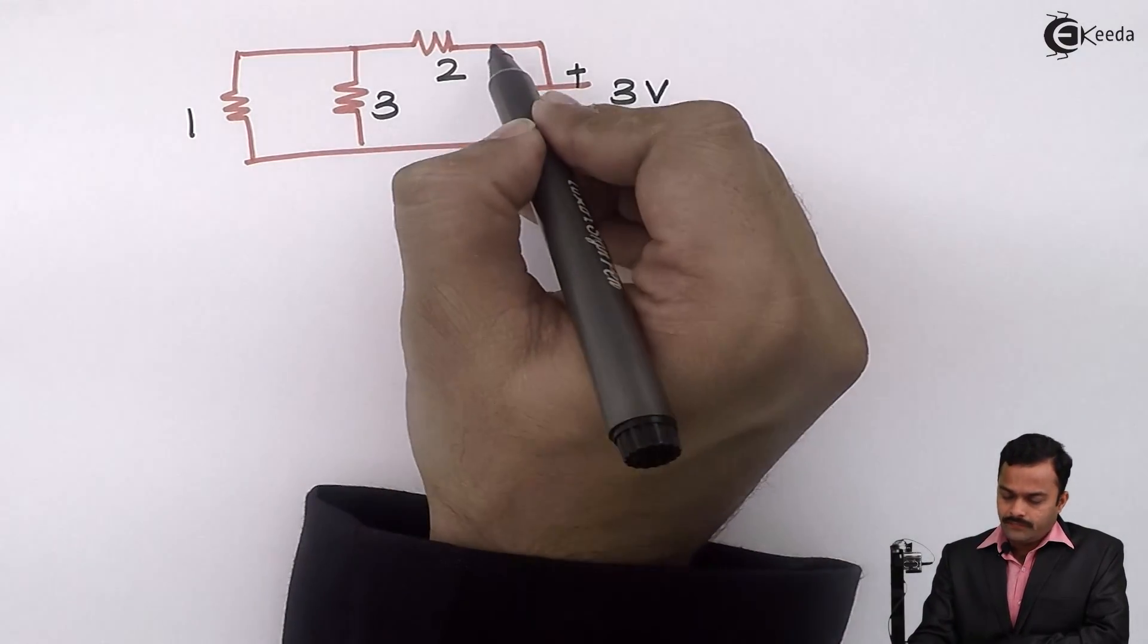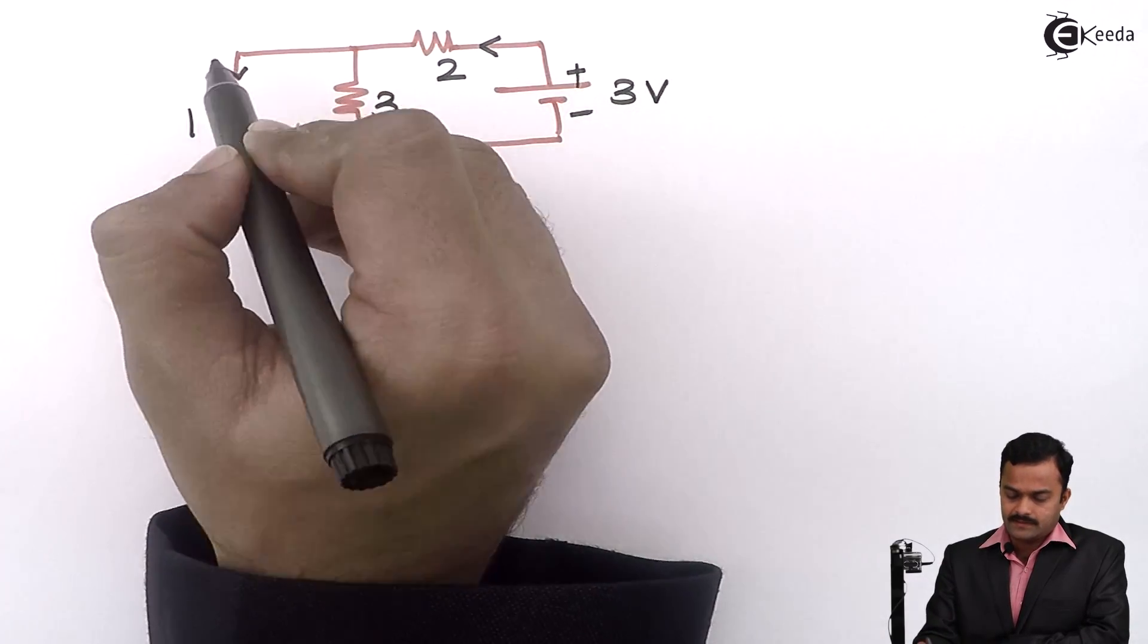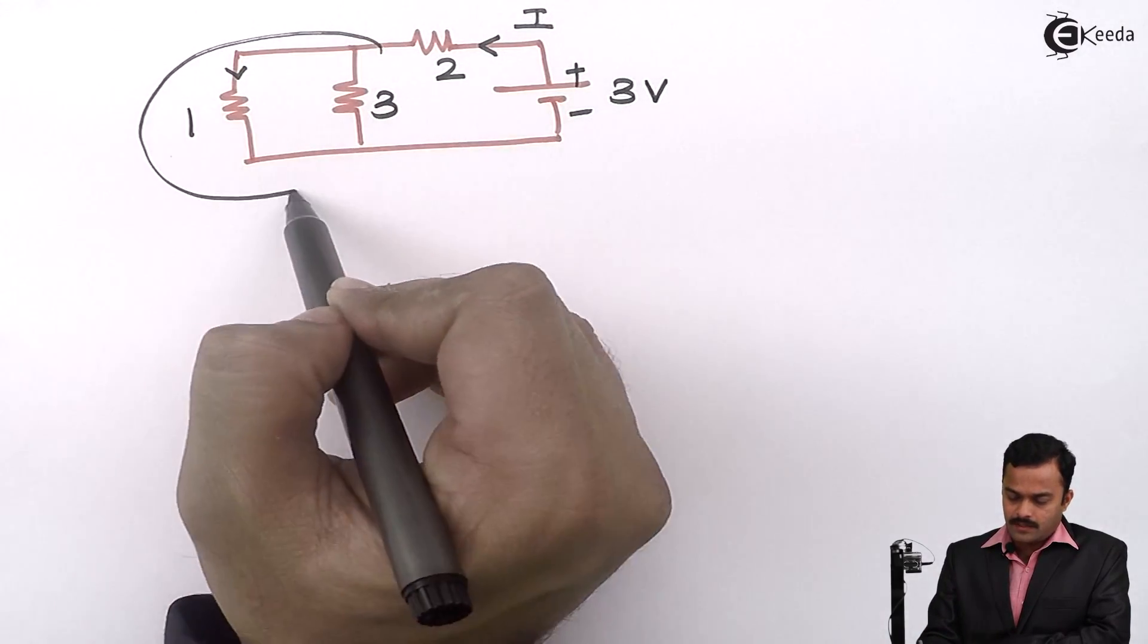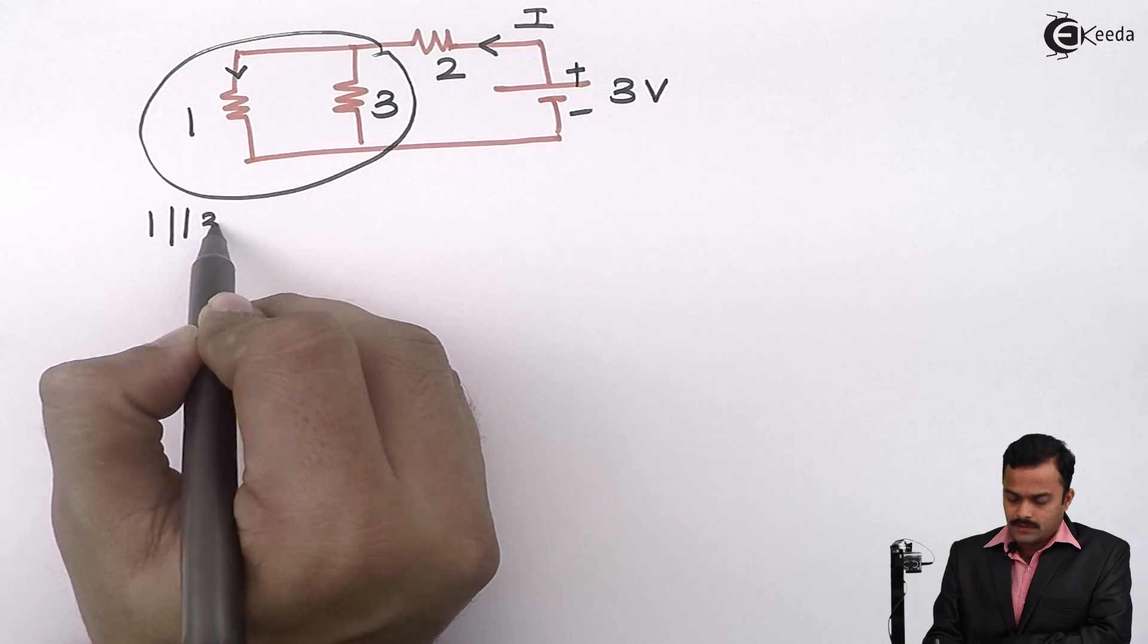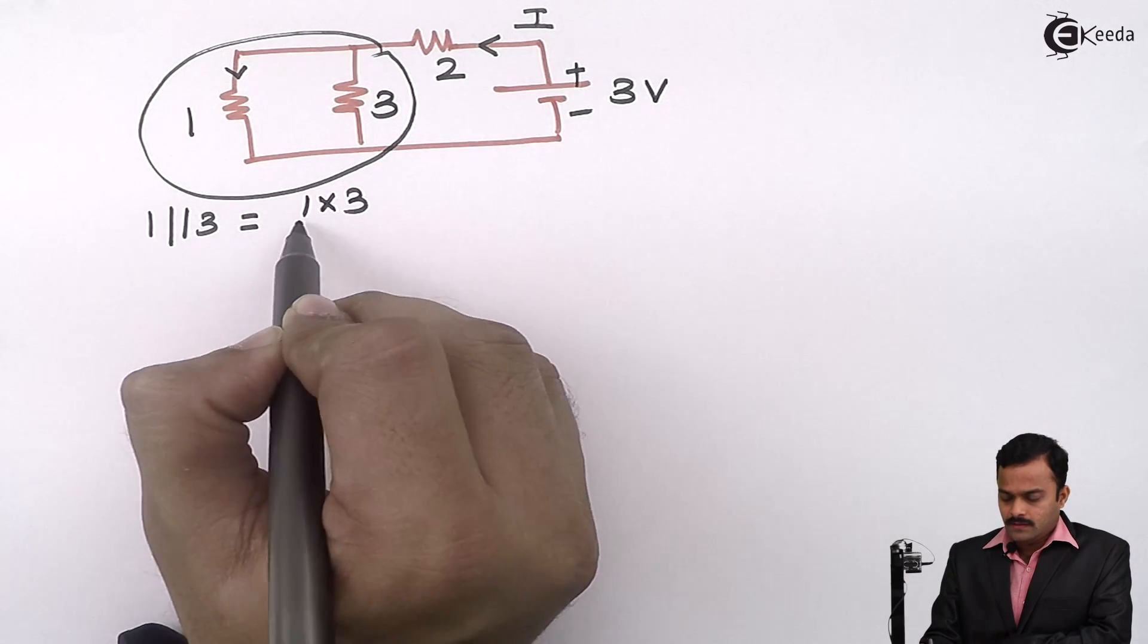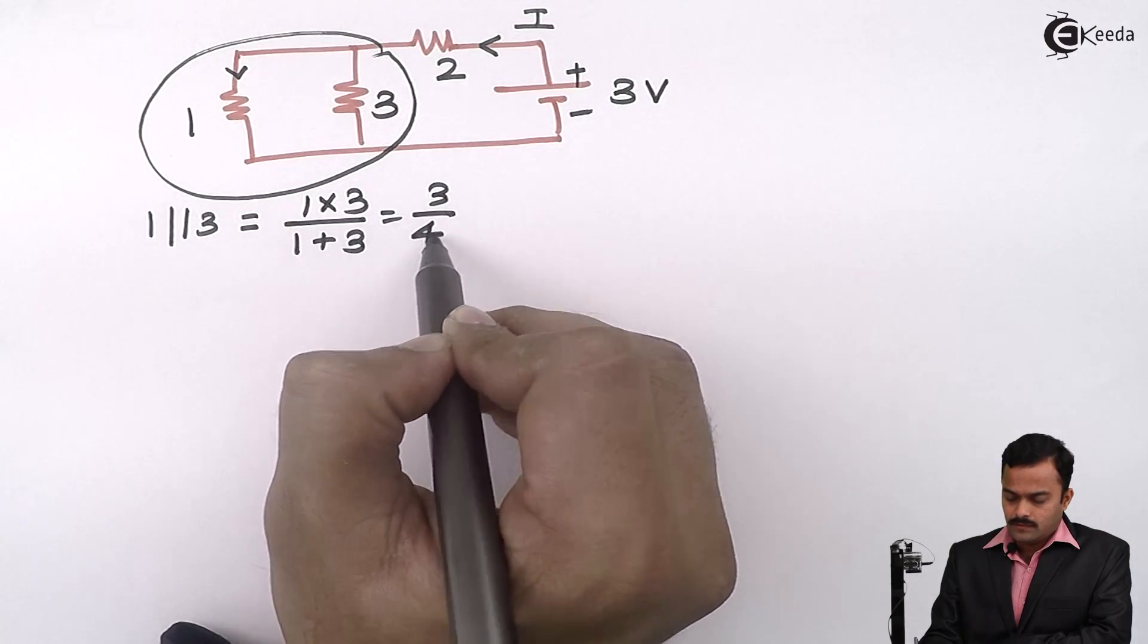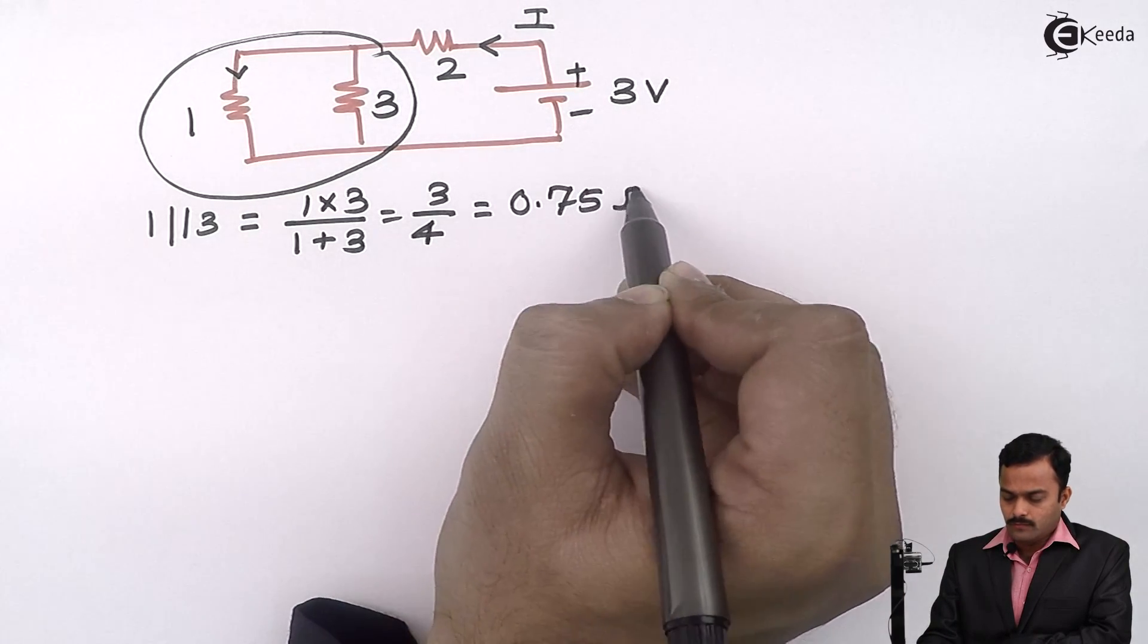Here also, if I know this current by using current divider, I can get this current. How to get this current which is I? Simply, I will consider parallel connection of this 1 and 3. So 1 parallel with 3 that will give me answer 1 into 3 divided by 1 plus 3. So it is 3 by 4. Answer is 0.75 ohm.